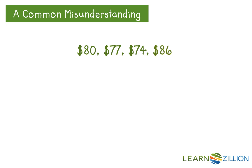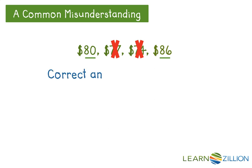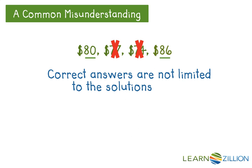Let's look at a common misunderstanding. We know that $77 and $74 are not possible solutions to the inequality m is greater than or equal to $80, but $80 and $86 are possible solutions. However, a common misunderstanding is when looking at possible solutions, students think that these numbers are limited to only those listed. Correct answers are not limited to the solutions given.